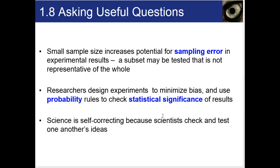A small sample size unfortunately increases the potential for sampling error — you're much better off having a large sample size. Researchers design experiments to minimize bias and use probability rules to check statistical significance of results. Science is self-correcting because scientists check and test one another's ideas — that openness to share your work and have others critique and recheck is one of the beautiful things about science.